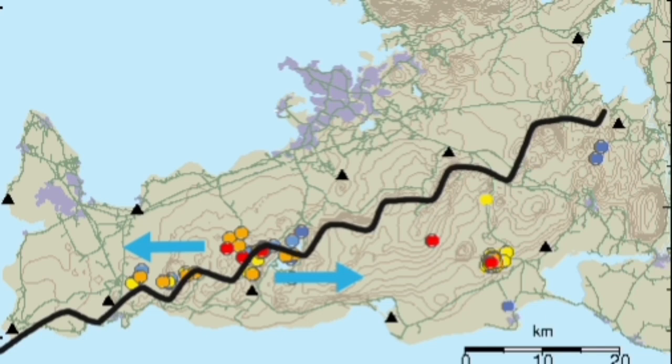The pulling apart of the land in this area creates this extension and transfers the movement to those transform faults at shallower angles. Most of it at the moment is concentrated in the Krisovic area.